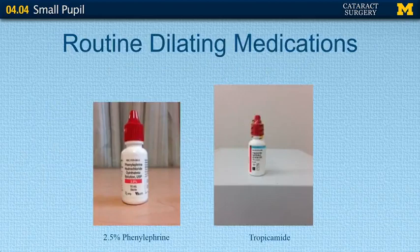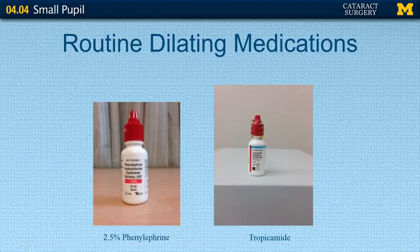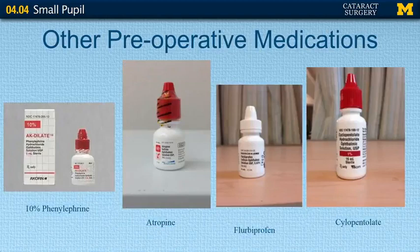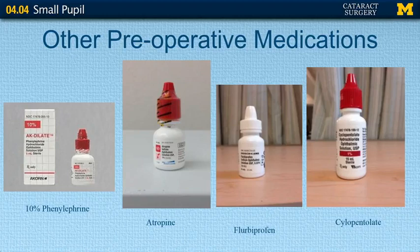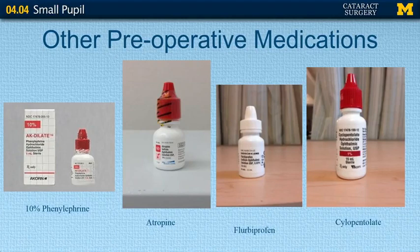Routine dilation medications vary by physician, but in general we typically start with a mydriatic such as 2.5% phenylephrine, and a cycloplegic agent such as tropicamide, which comes in both 0.5% and 1%. Other preoperative medications include 10% phenylephrine if the patient doesn't dilate well, though you want to ensure blood pressure is controlled as it can cause elevation. Cyclopentolate or atropine can sometimes be used several days before surgery. Lastly, flurbiprofen is a non-steroidal anti-inflammatory that can be used to prevent miosis during cataract surgery.